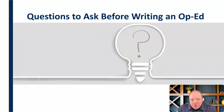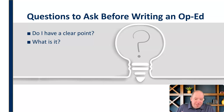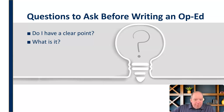So op-eds are different — a different kind of animal. There are a couple of key questions we should ask before writing one. First: do I have a clear point? Do I have something specific that I'm trying to get at? Do I have a clearly defined goal and a clearly defined point that I can share with the audience? And if so, the second question is: what is it? Can I articulate that in a sentence, in a few words, as concisely as possible? Not a long, rambling, vague, theoretical thing — do I have a very clear point?